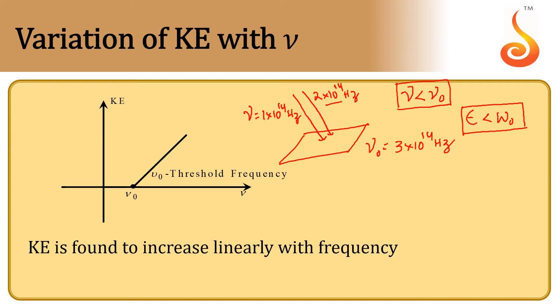So, if we want to observe the photoelectric effect, then what must be the minimum frequency that should be incident on the metal surface? At least the frequency of the light should be equivalent to the threshold frequency of the metal — that means the light should fall on the metal surface at least at 3×10¹⁴ Hz, which is the threshold frequency, and whose work function, let it be W₀.